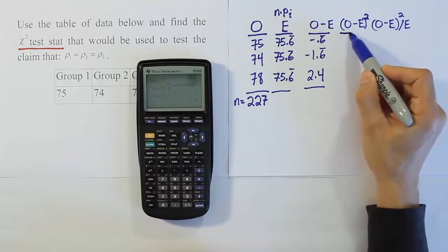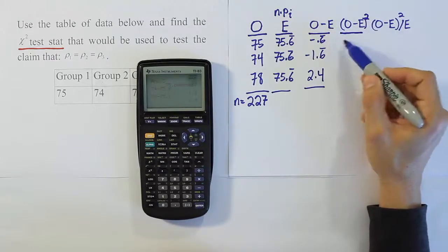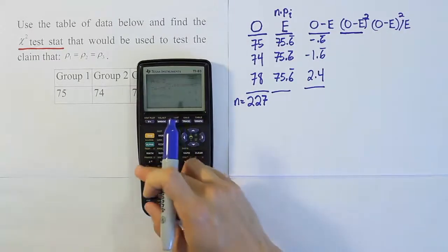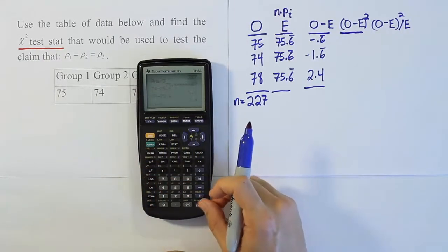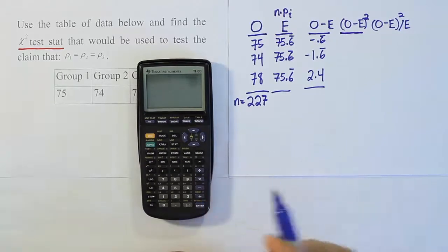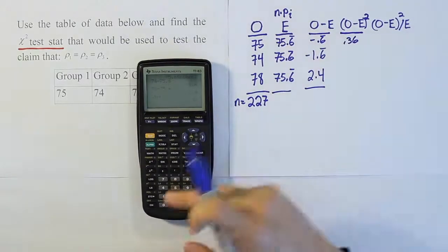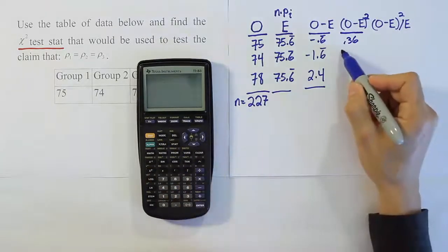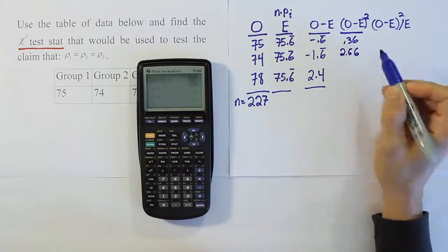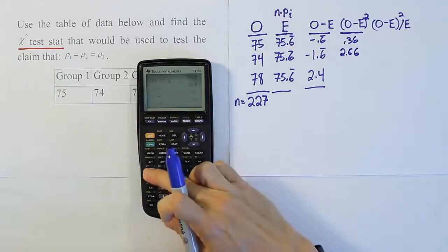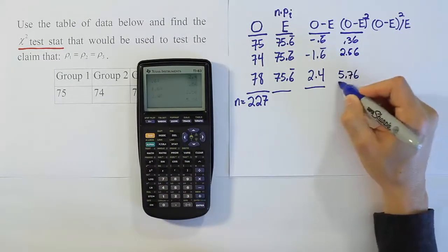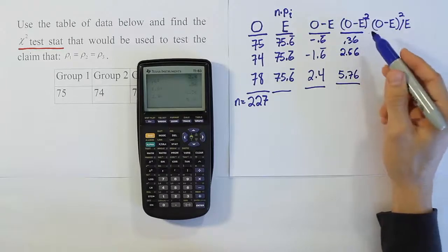Now from there, you want to do observed minus expected quantity squared. So you're going to square each of these values. We'll do 0.6 squared. I'm not putting the negative in because when you square a negative number it becomes positive anyway. So I'm just going to say 0.36 for that one, 1.6 squared is 2.56, then 2.4 squared is 5.76. So that's your observed minus expected squared.